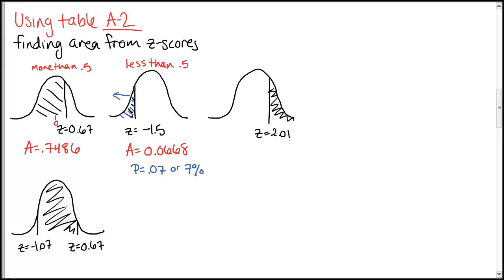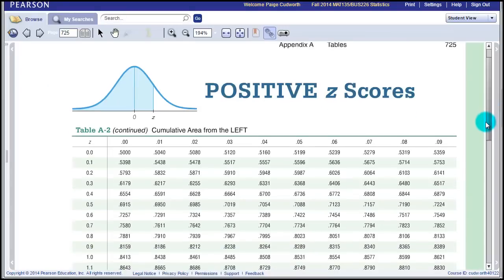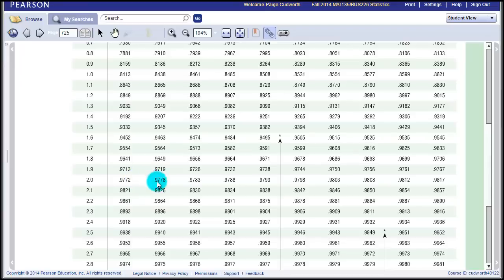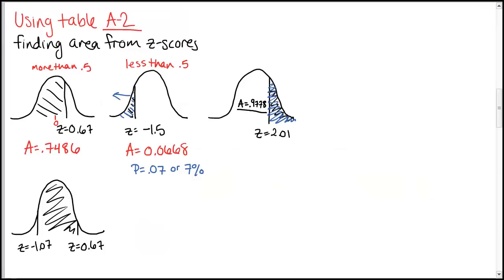Next: we have a z-score of 2.01, which is positive, so we'll use the positive chart. But notice that the area we want is to the right. The area from the table will be to the left, so we first look that up. For 2.01, that's the 2.0 row and 1 over for 0.01, giving 0.9778 — the area to the left. Now the area we actually want is to the right, so we do 1 minus 0.9778, giving us 0.0222.